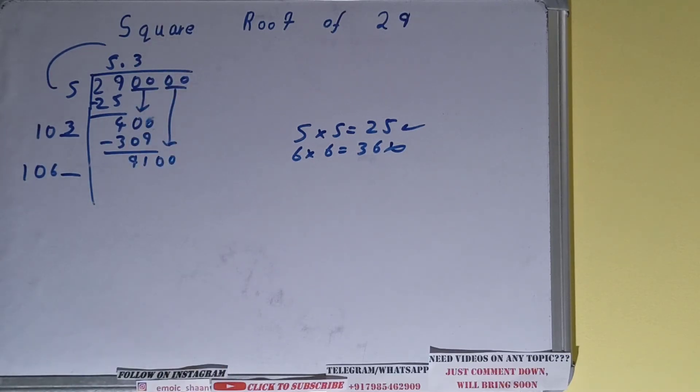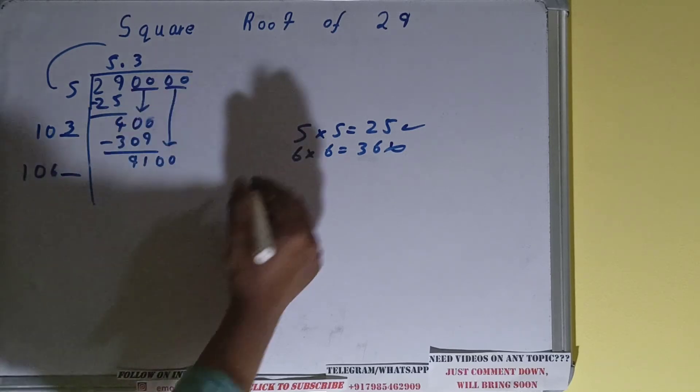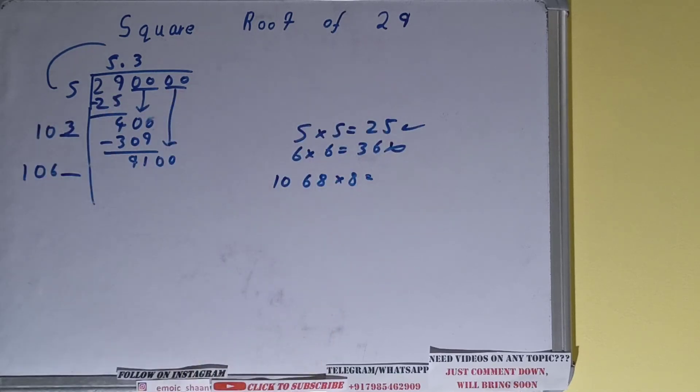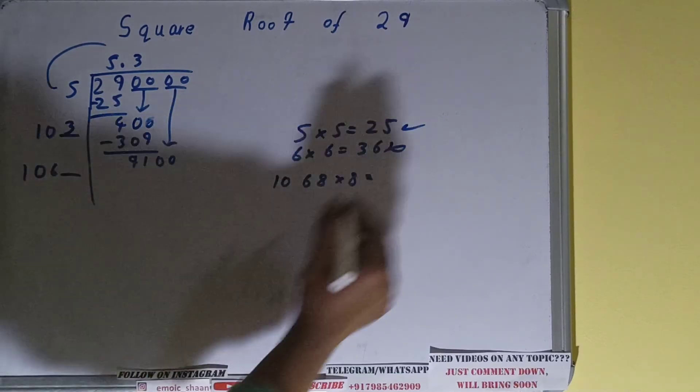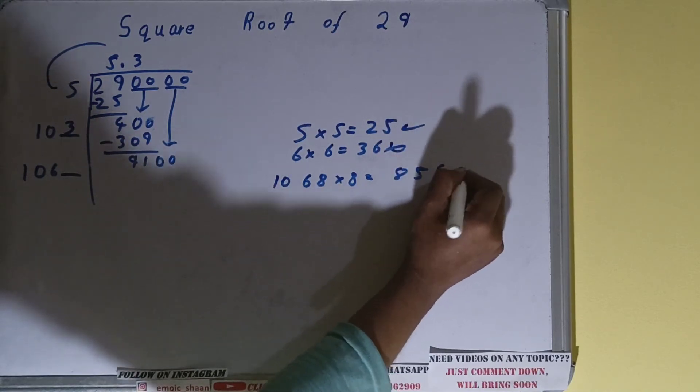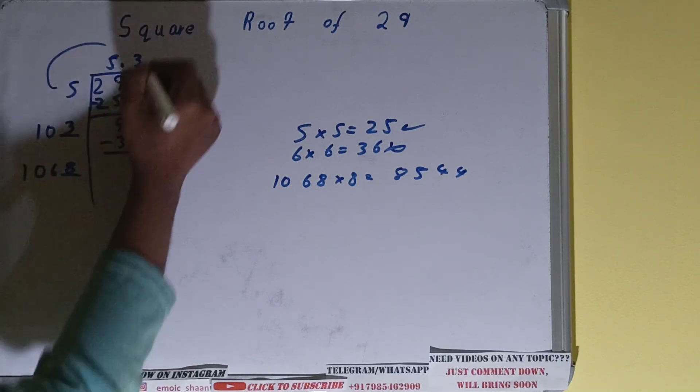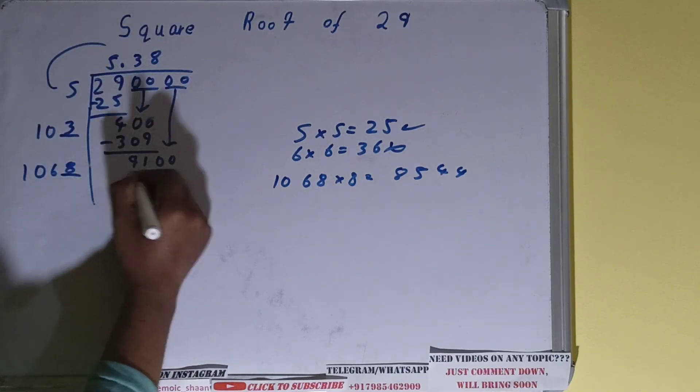All right, so let's try with 8. 1068 times 8, we'll get 8544. That is okay to take, so let's take 8. 8544, subtract it.